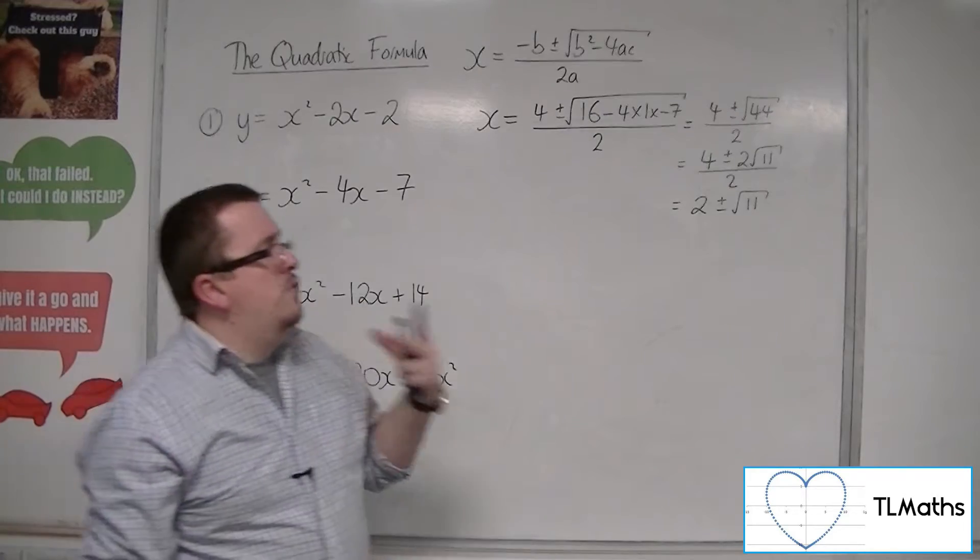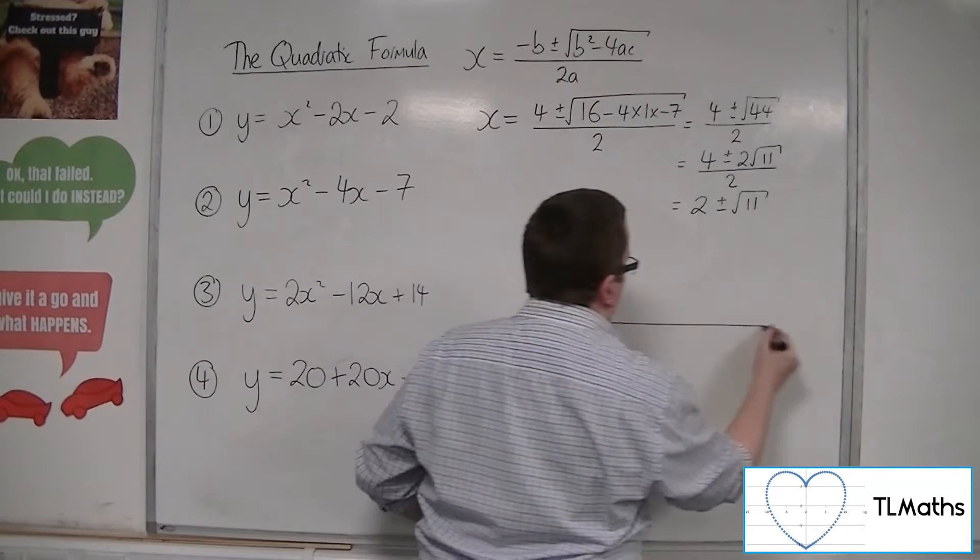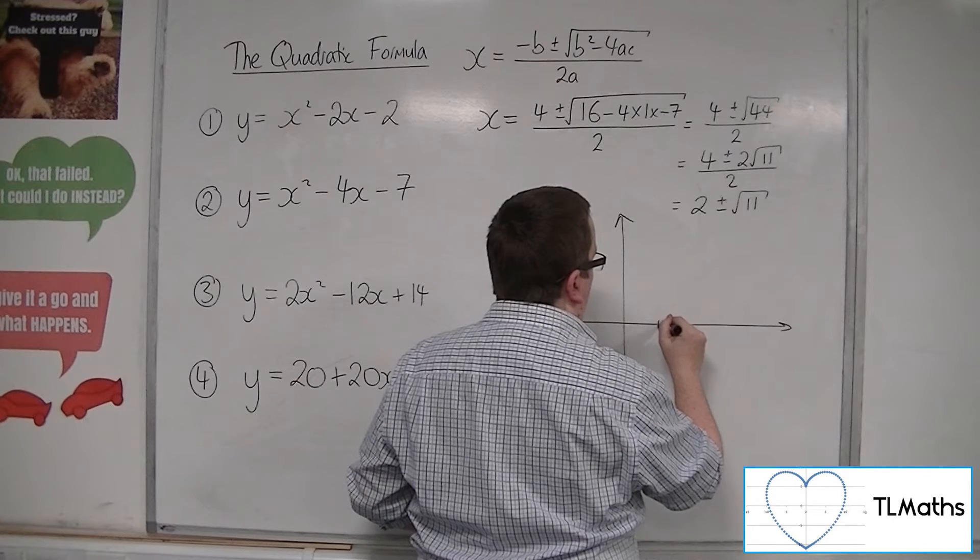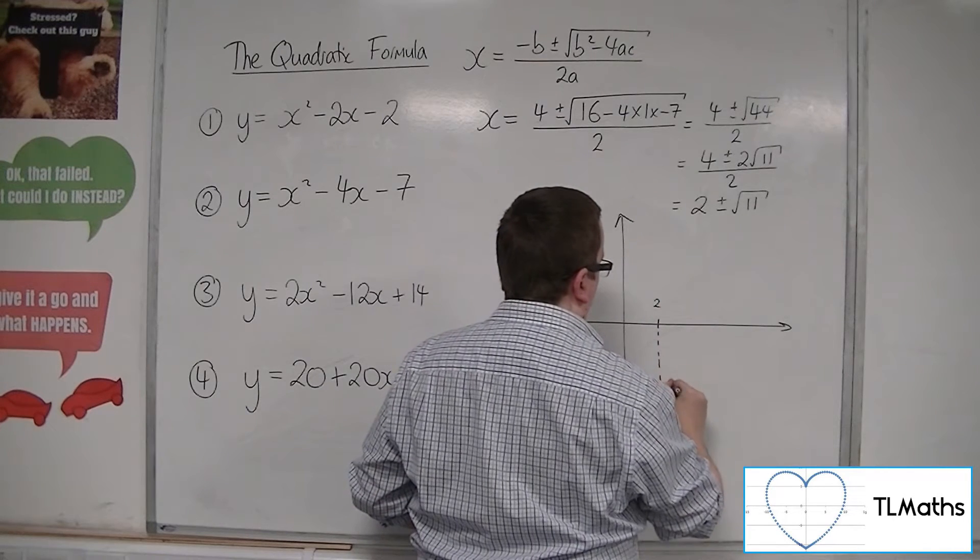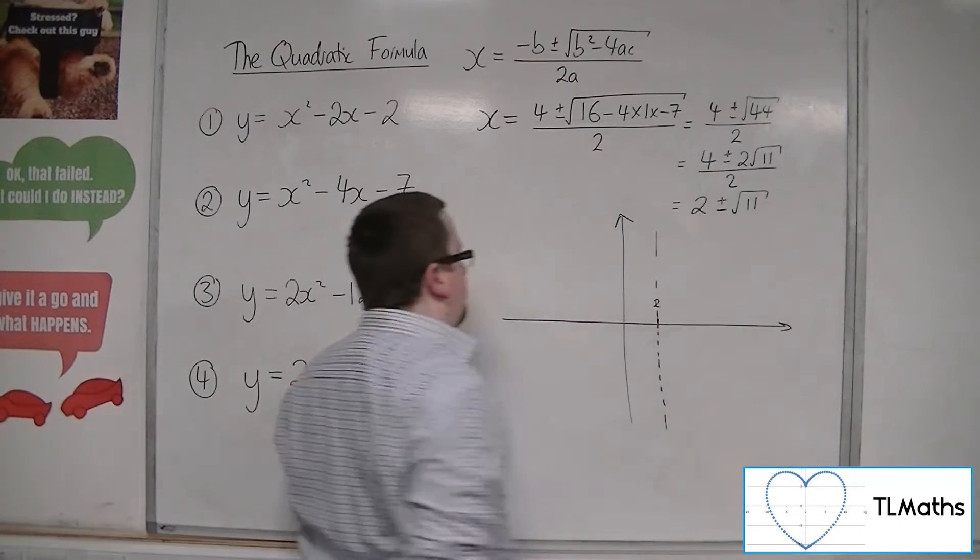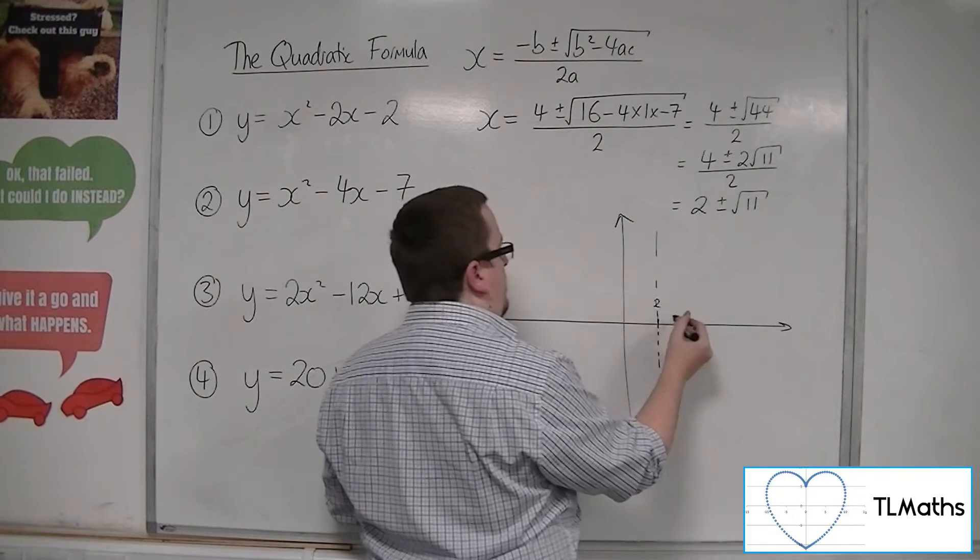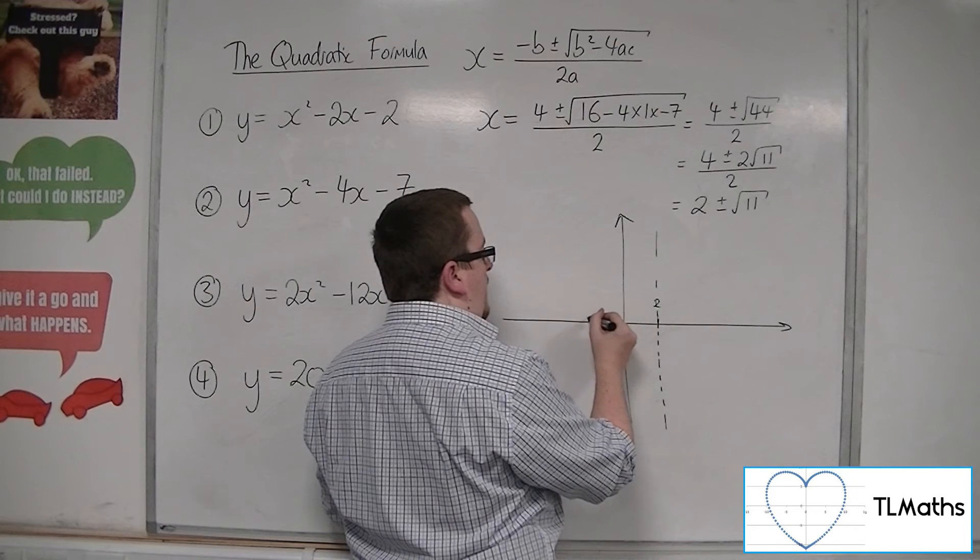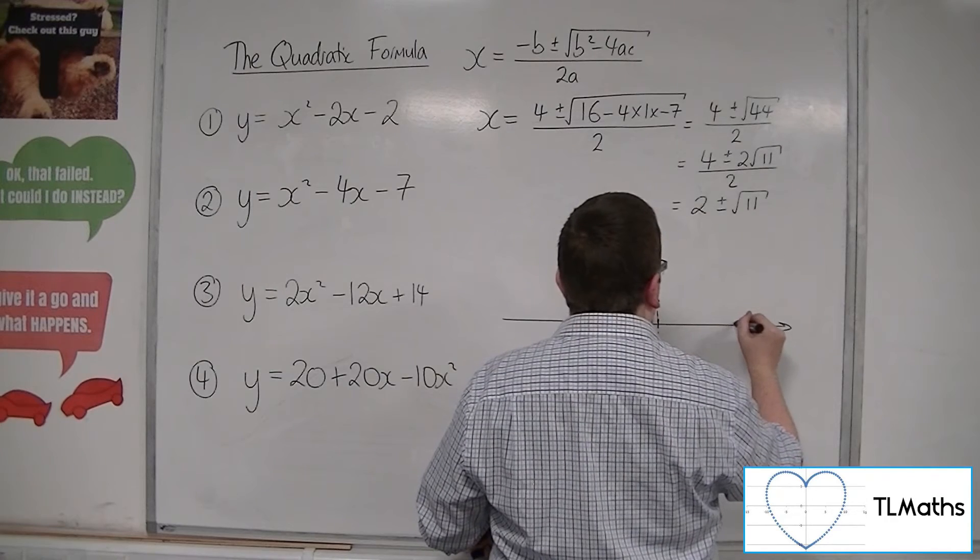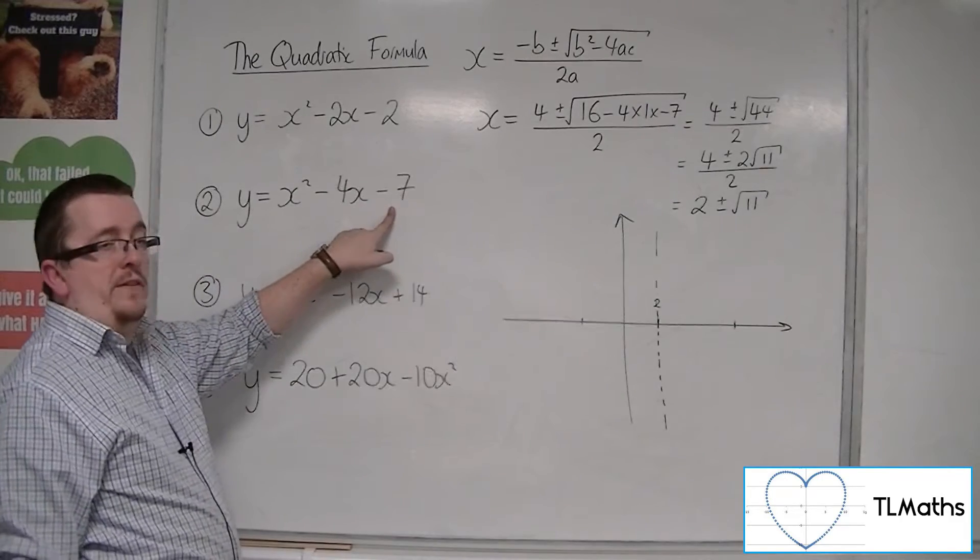So root 11 is larger than 2. So we do know that the vertex is at 2. So that's your mirror line, if you like. So 2 plus root 11 and 2 minus root 11. 2 minus root 11 must take it beyond the y-axis. And 2 plus root 11, so it must be symmetric. And the curve must go through minus 7 on the y-axis.